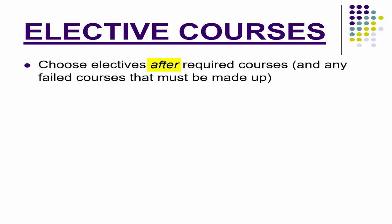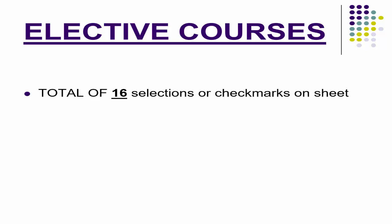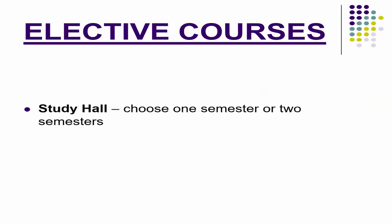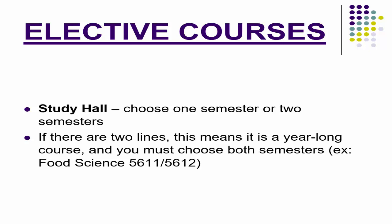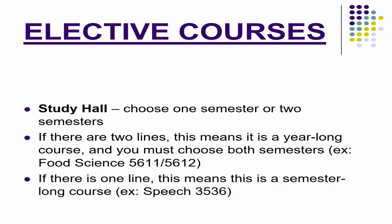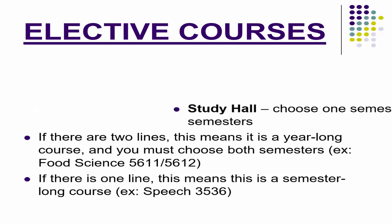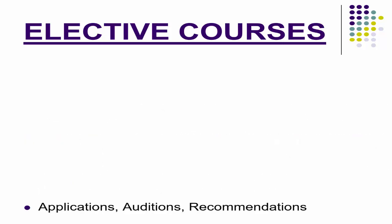Now let's talk elective courses. Choose electives after you've taken care of required courses and any failed courses to make up. Most students will have 16 total check marks on the course selection sheet. Exception: culinary takes two periods a day, so you'd have 14 selections. For study hall, choose first semester, second semester, both, or not at all. If there are two lines for a course, it's year-long — like food science, 5611/5612. One line means semester-long — like speech, 3536. Note that some courses require applications, auditions, or recommendations, so meet your deadlines.